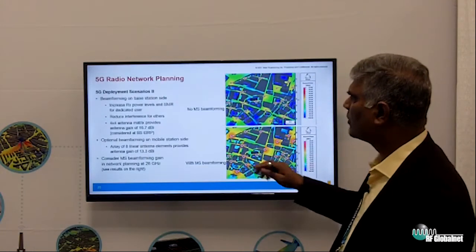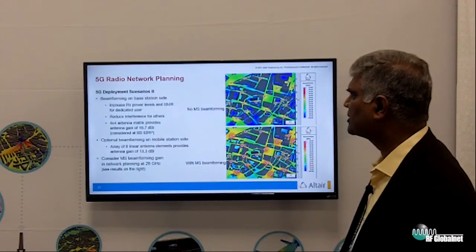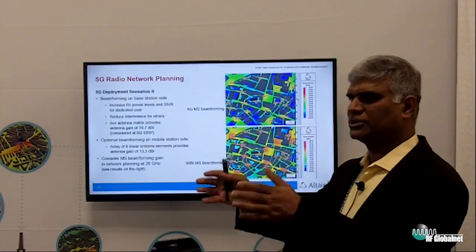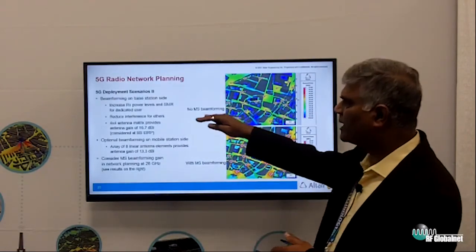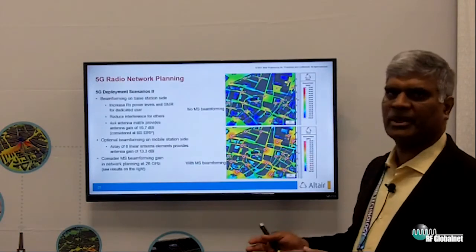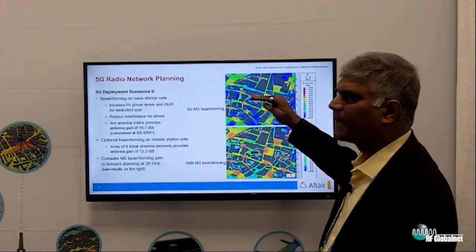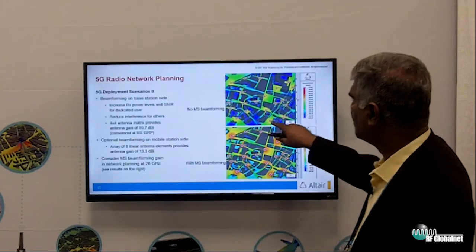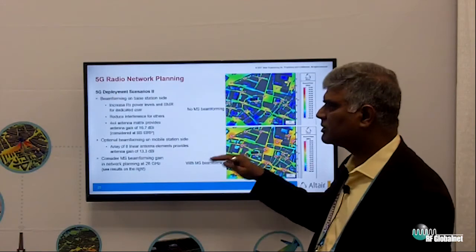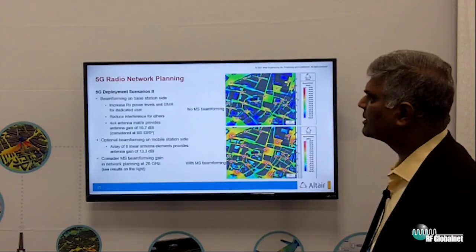But also, what one can do is have the mobile station or base station beamforming. We have the base station focusing towards the device. If the mobile station, the device, also focuses towards the base station, you get much better coverage. You can see if there's no beamforming in a mobile station, there are blind spots here. But once the mobile station is also focusing towards the base station, you can see much better coverage.